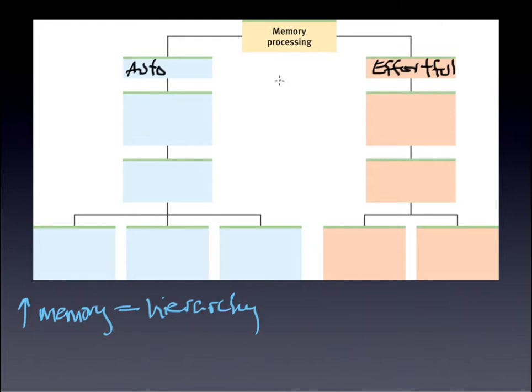Now below each, something else occurs. With automatic, it would make sense that implicit memories fall into this category. They are automatically created as a result of classical conditioning. We don't have to concentrate very much to do that. Another word for this is non-declarative memory. The other aspect is also procedural memory, although there is an effort at the beginning of it, but it would still fall into this particular category.